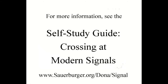We have shown you some examples of actuation and its effect on traffic and pedestrians. For more information, see the self-study guide, Crossing at Modern Signals, at www.sauerberger.org/dona/signal.